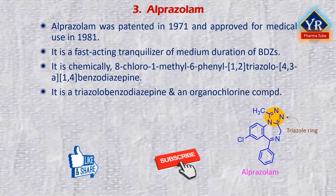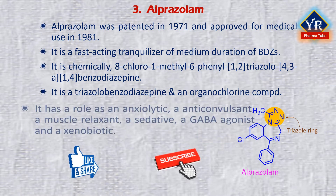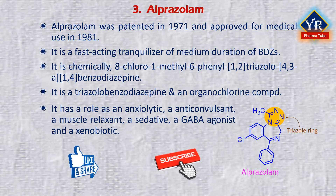Alprazolam is a chemical analog of triazolam, differing by the absence of a chlorine atom in the ortho position of the phenyl ring. It is a triazole and benzodiazepine derivative substituted with a phenyl group at position 6, a chlorine atom at position 8, and a methyl group at position 1. It has a role as an anxiolytic drug, anticonvulsant, muscle relaxant, sedative, GABA agonist, and xenobiotic.